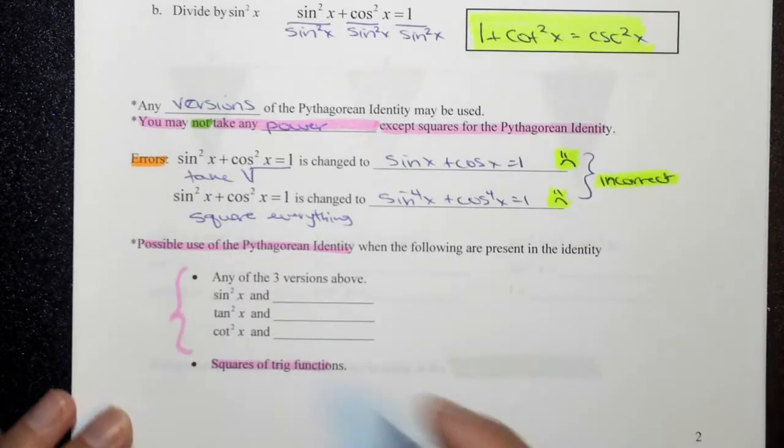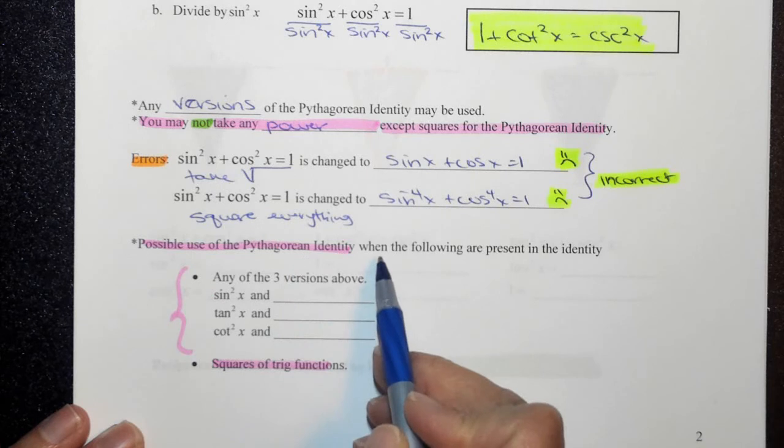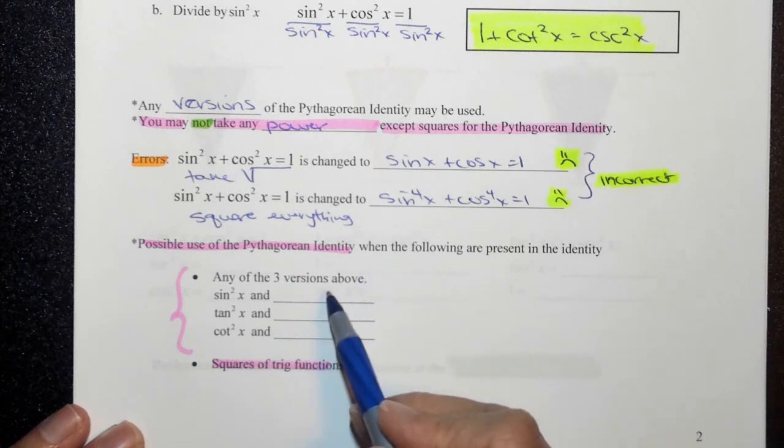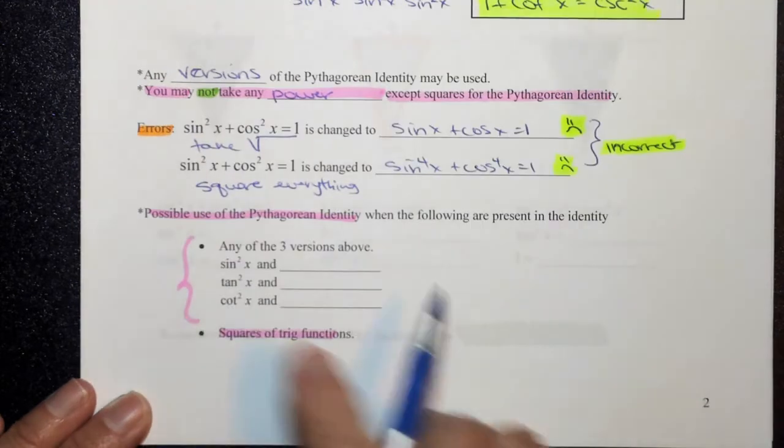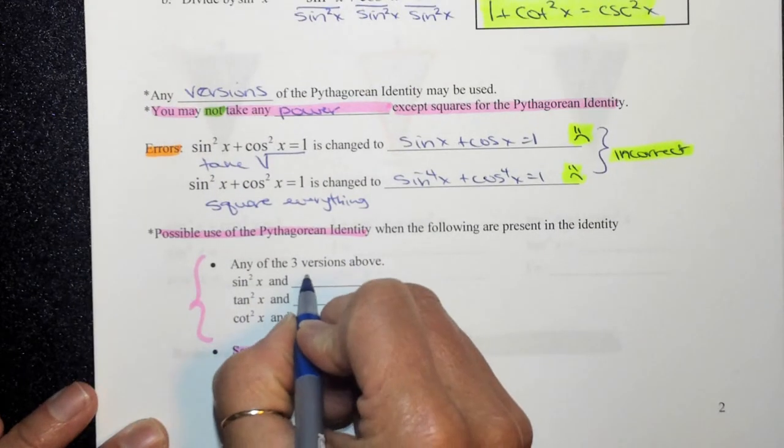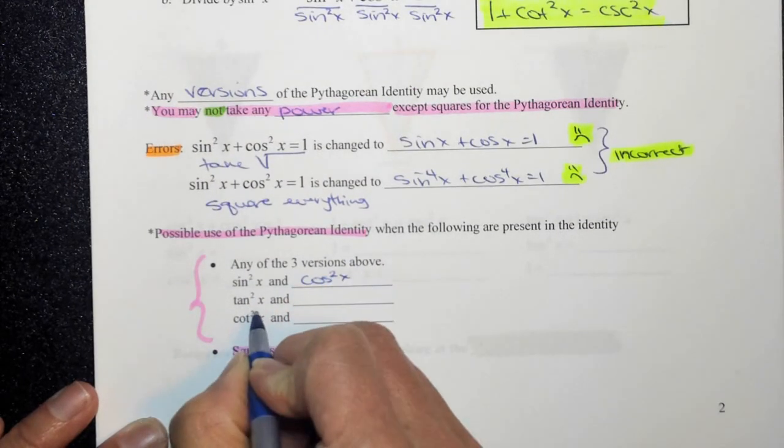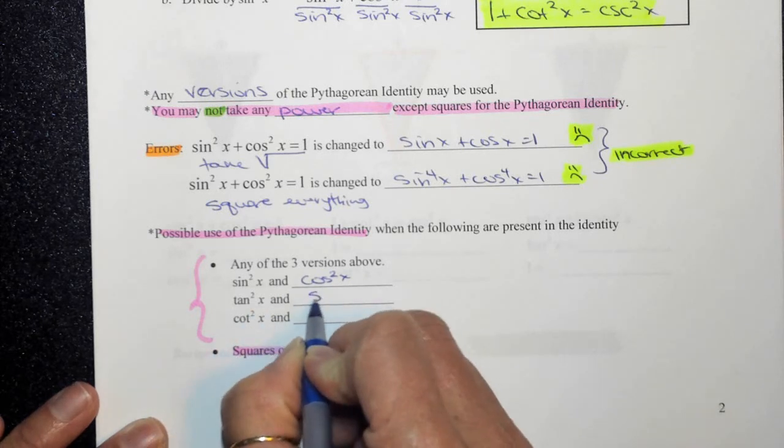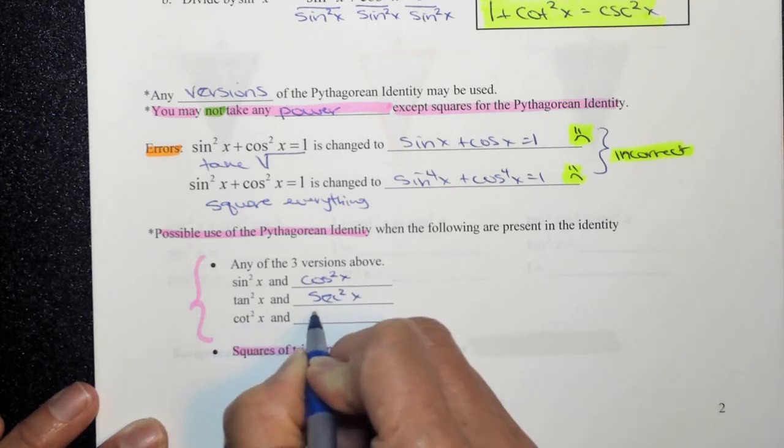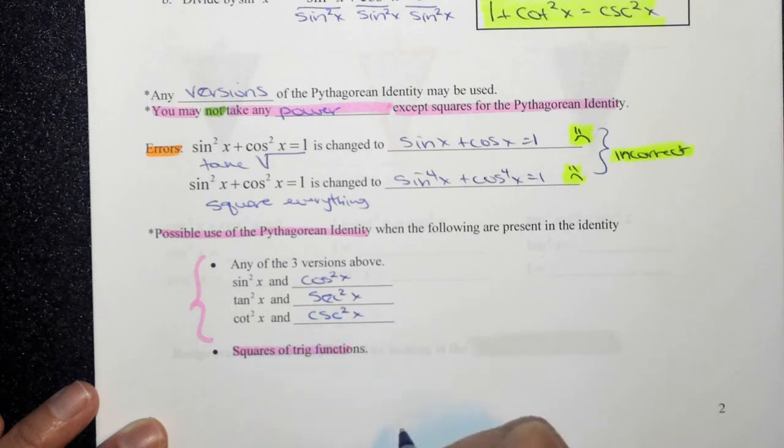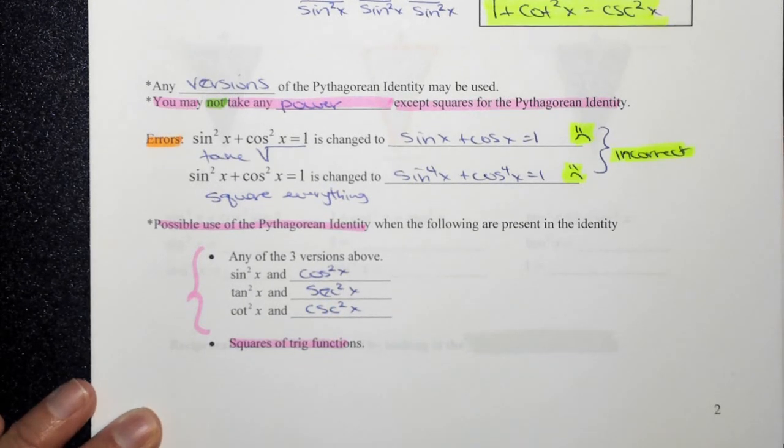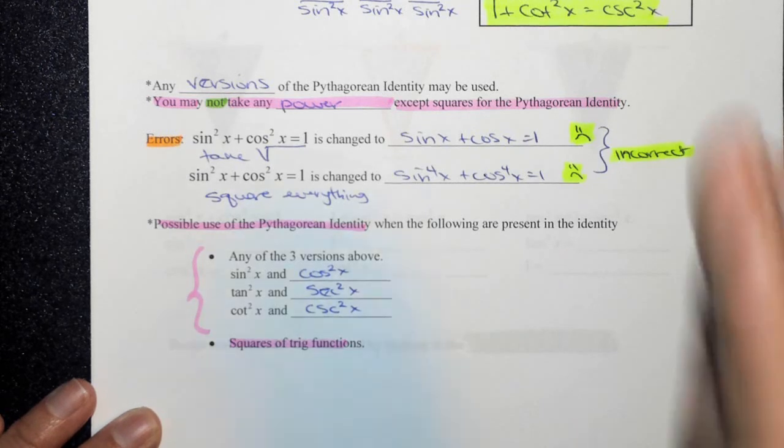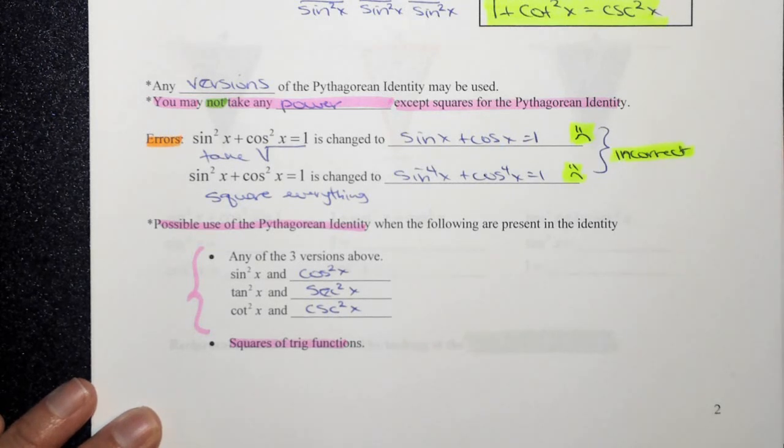So possible uses of the Pythagorean identity when the following are present is what you would do. Any of the three versions above you would use if you have sine squared and cosine squared, tangent squared and secant squared together, or cotangent squared and cosecant squared, or if you have squares of trig functions. So this will make a little bit more sense when we start going through some problems, but this is why it's important to know your Pythagorean identities.